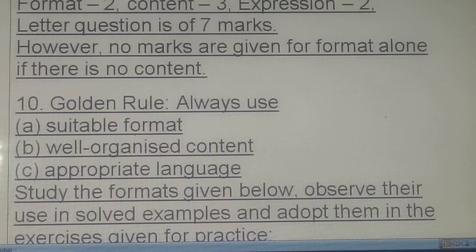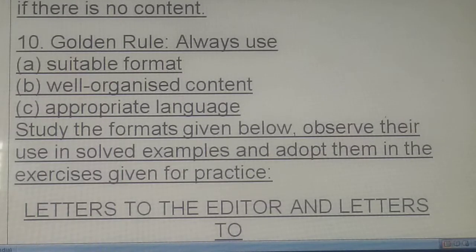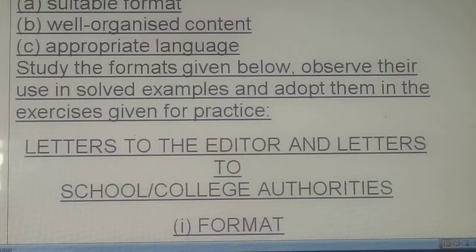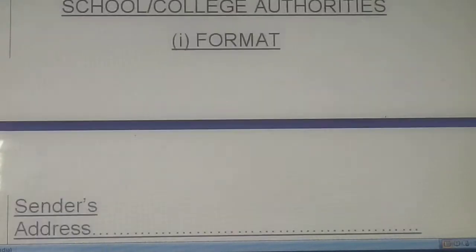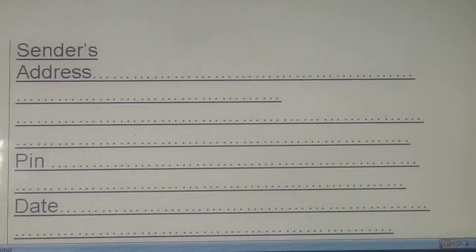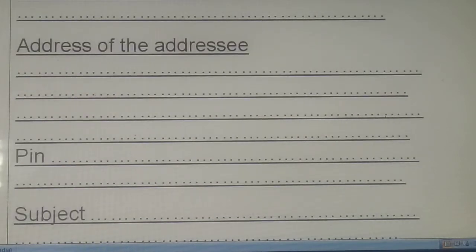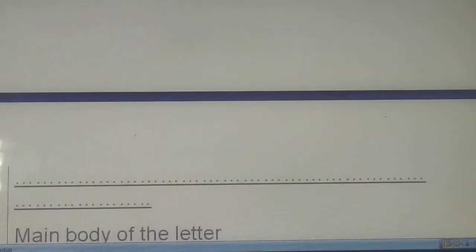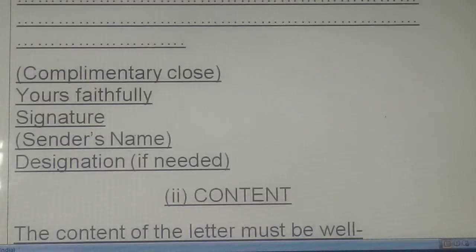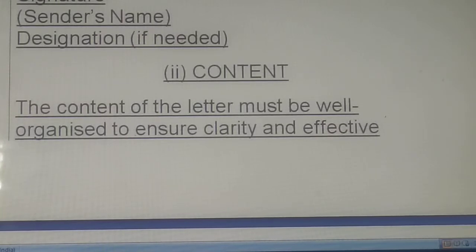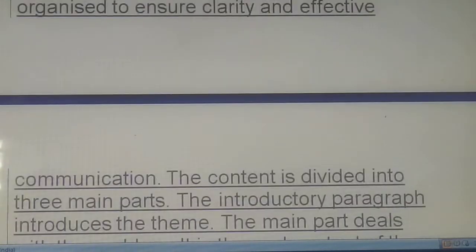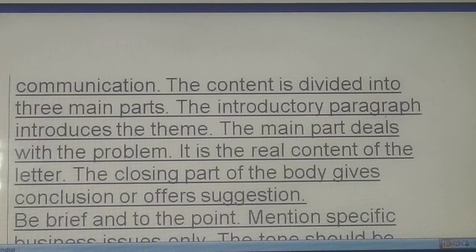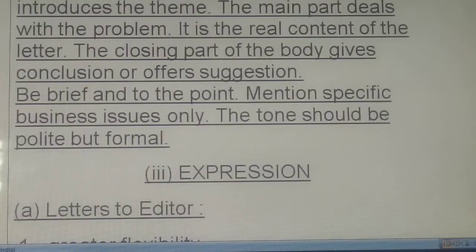The golden rule for marking: use a suitable format and well-organized content. For a letter to the editor, the format is: sender's address with pin code, date, address of the recipient with pin code, subject, introductory para, main body of the letter, concluding para, and complementary close. The content must be well organized to ensure clarity and effective communication. The introductory paragraph introduces the theme, and the main part deals with the problem — it is the real content of the letter. The tone should be formal.